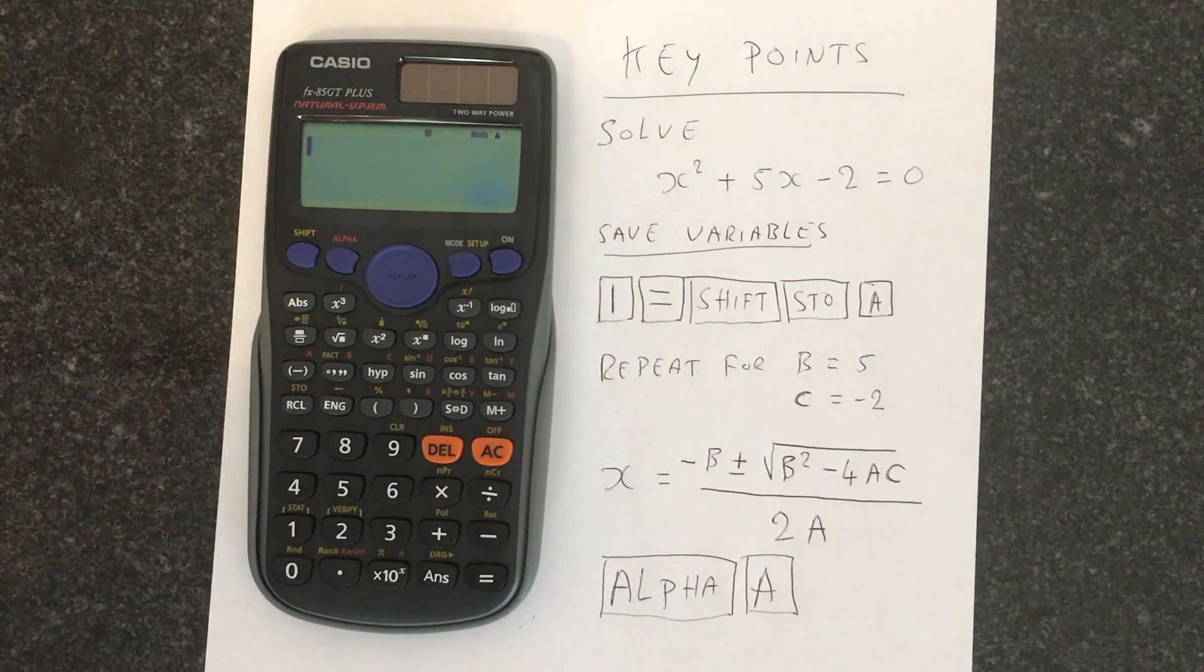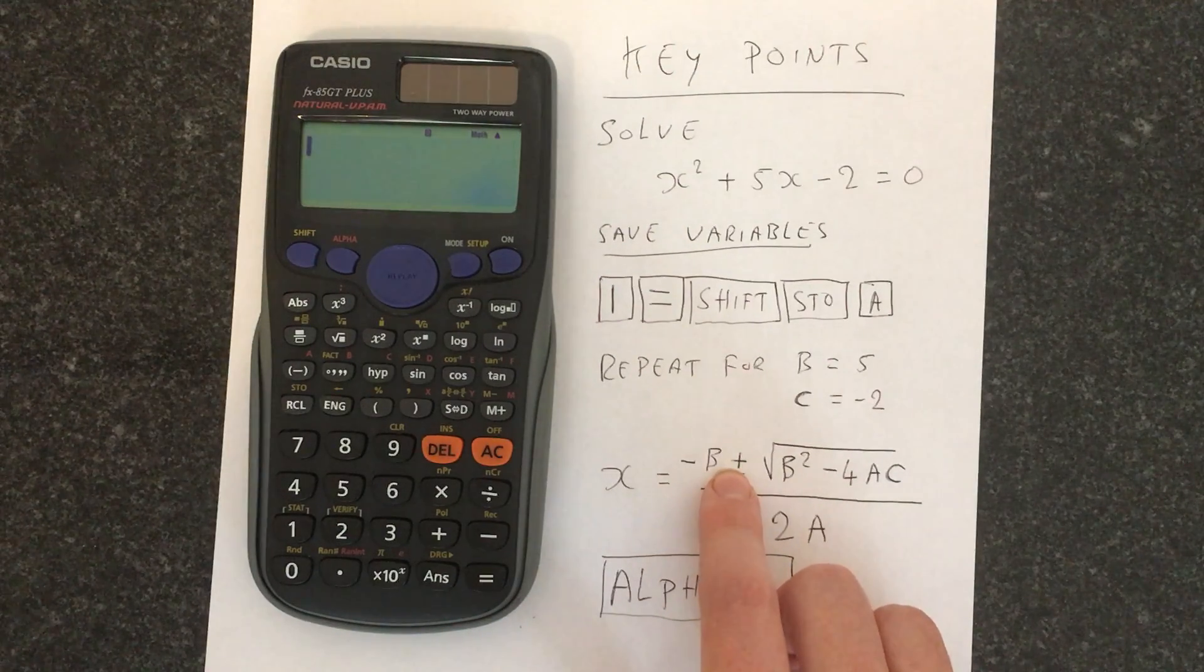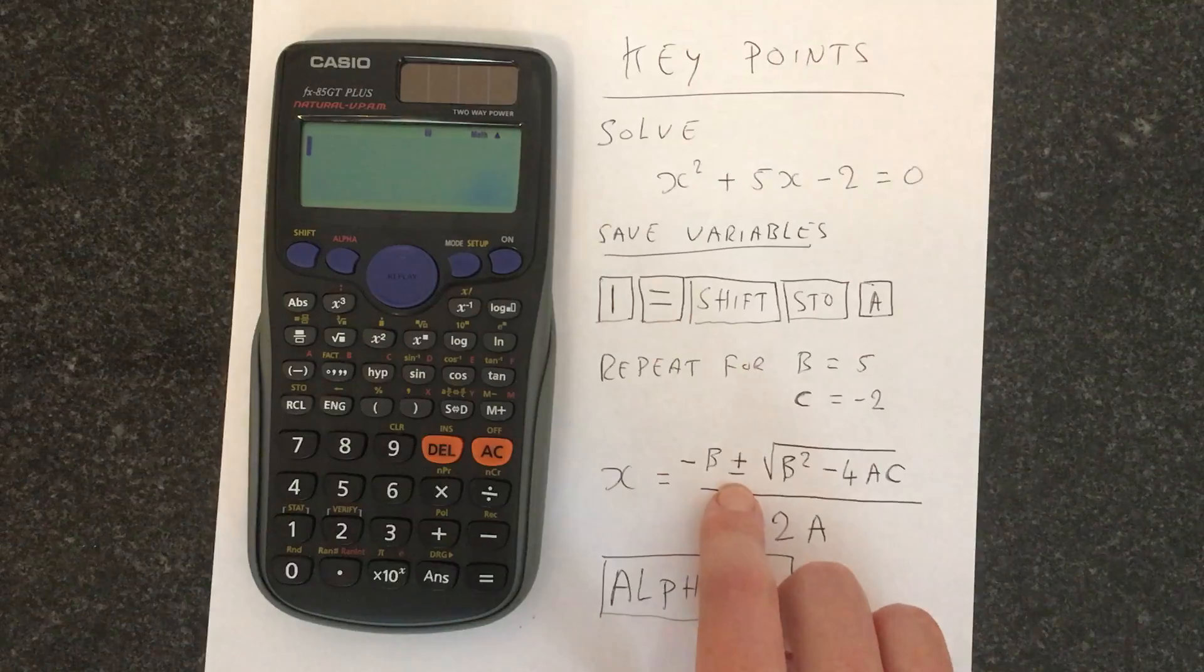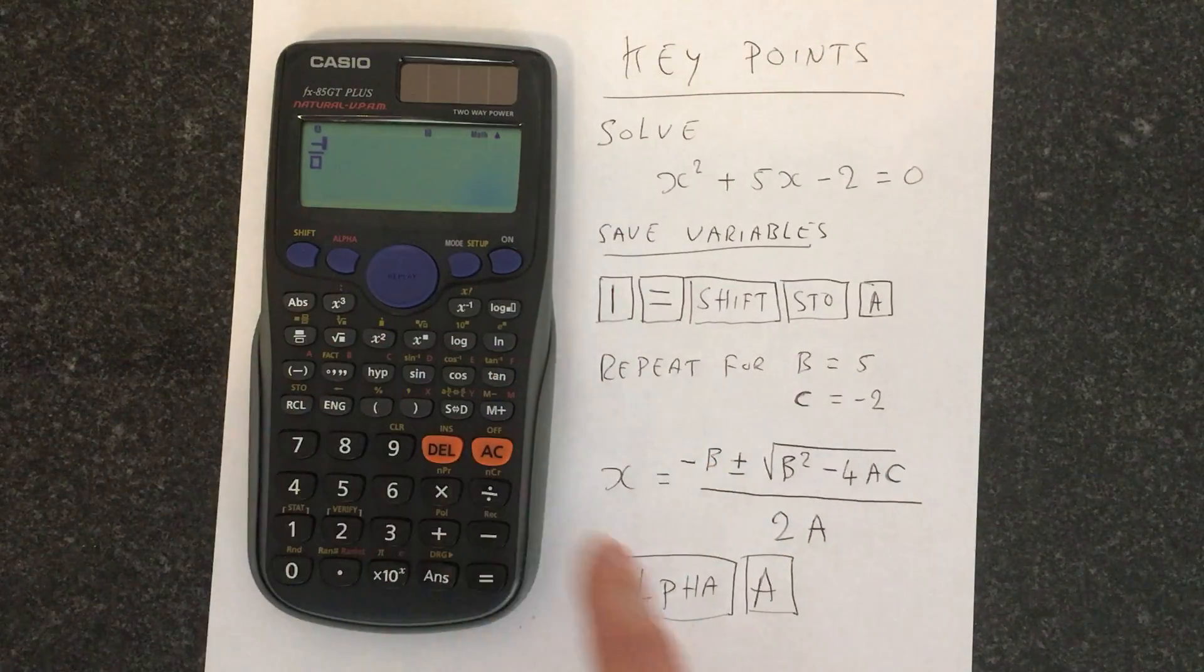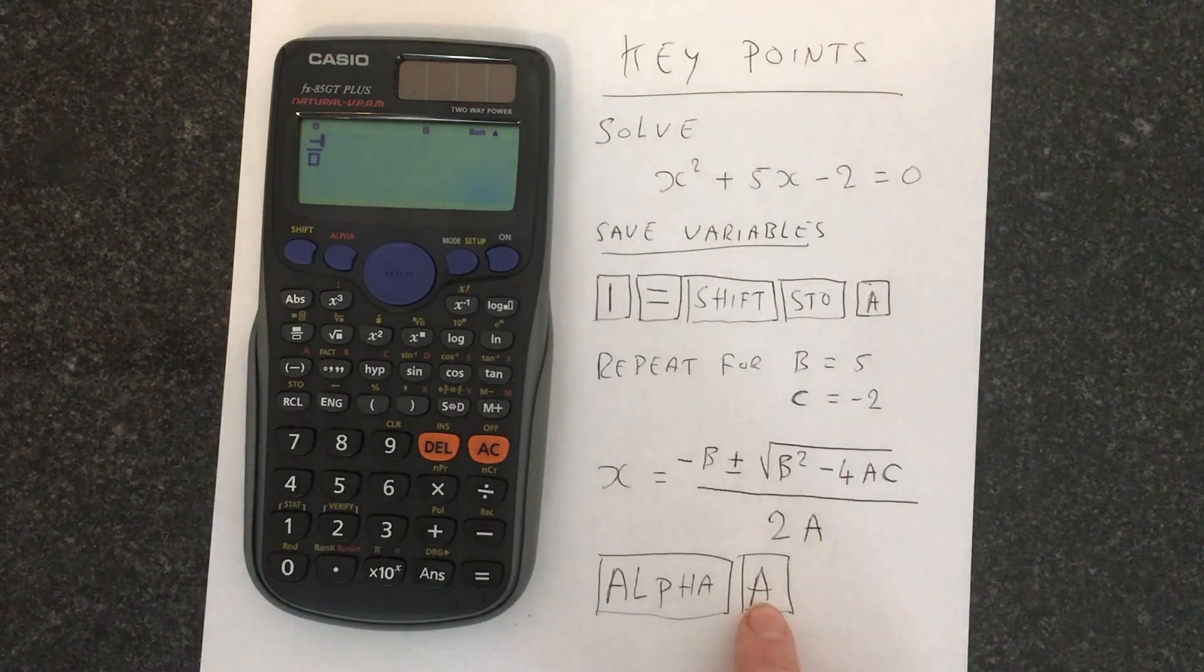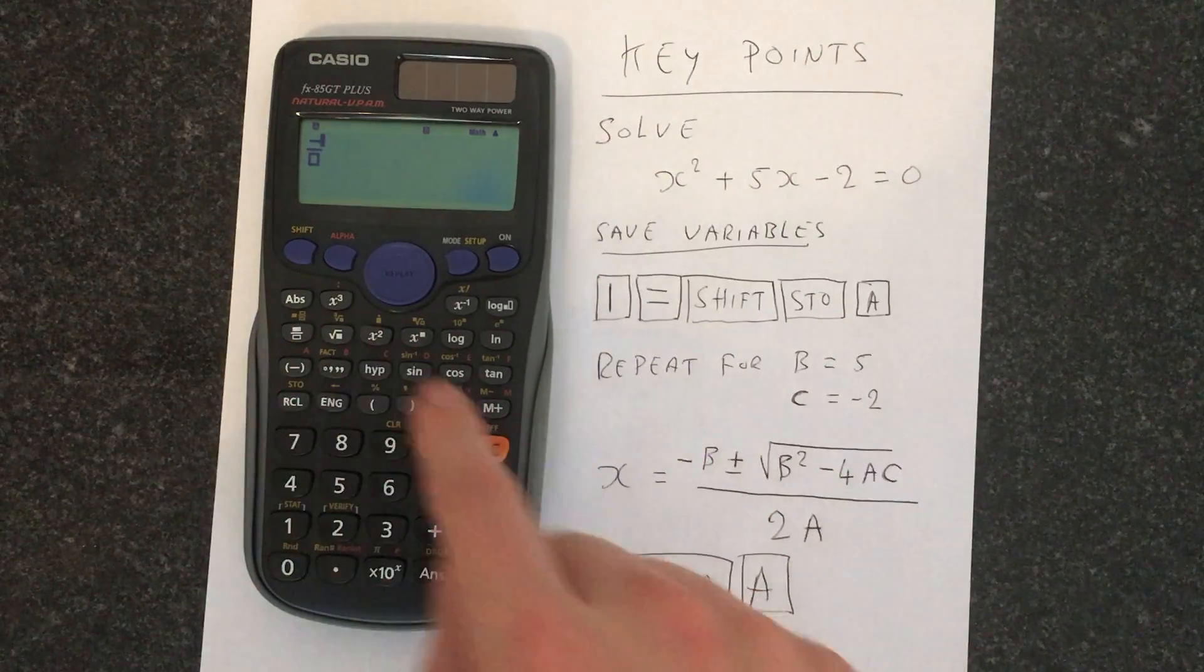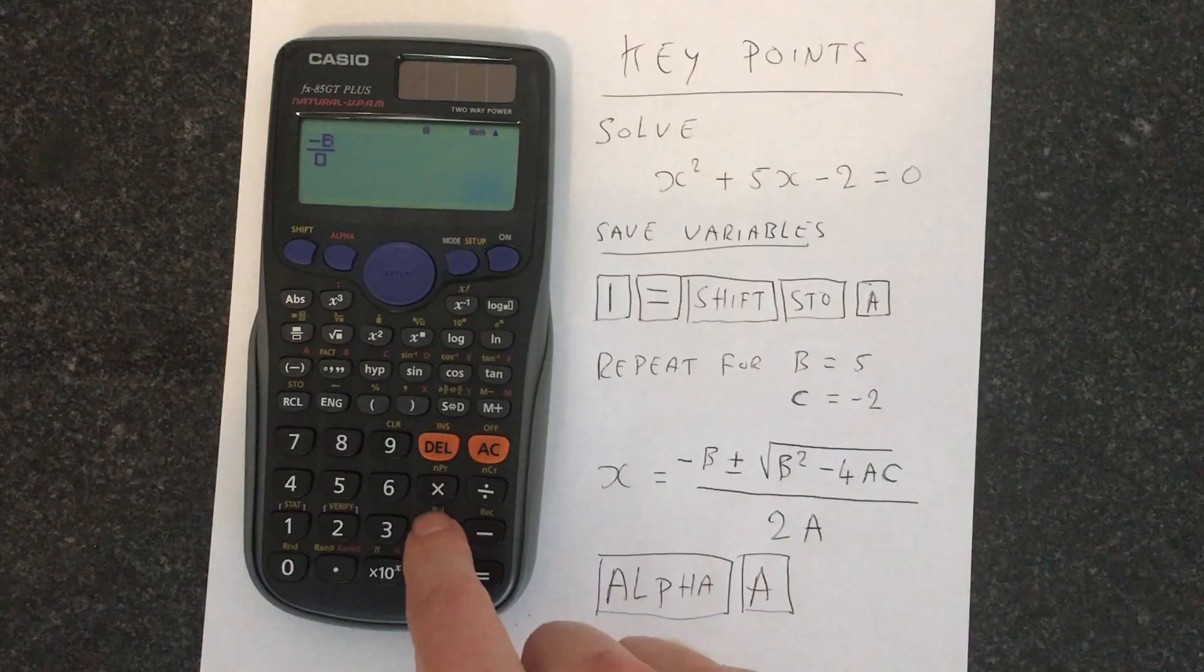So we just type in the quadratic formula. Remember, you've got two solutions. So you'll do the plus solution, and then you'll do the minus solution. So we need the fraction, then we're doing minus. Alpha is the way that you access this. If you want a, you would press alpha a. If you want b, you would press alpha b. We'll do the plus solution. Square root,